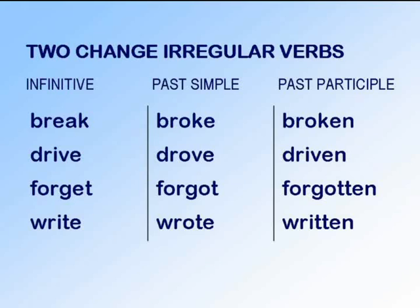And now for the third family, the two-change irregular verbs. You can see that all three columns are different. Listen and repeat: break, broke, broken. Drive, drove, driven. Forget, forgot, forgotten. Write, wrote, written. And now quickly: break, broke, broken. Drive, drove, driven. Forget, forgot, forgotten. Write, wrote, written.